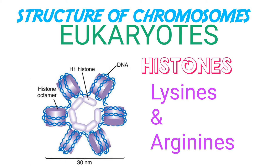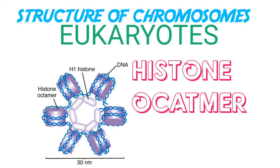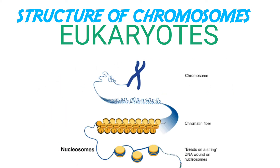Histones are a set of positively charged basic proteins. They are rich in the basic amino acid residues such as lysine and arginine. Histones are organized to form a unit of eight molecules called a histone octamer. The negatively charged DNA is wrapped around the positively charged histone octamer to form a structure called a nucleosome. A typical nucleosome contains 200 base pairs of DNA helix.